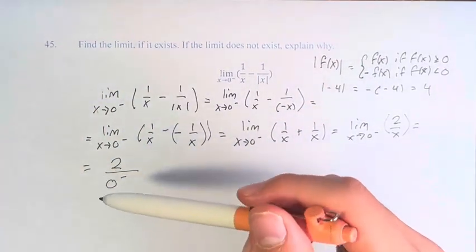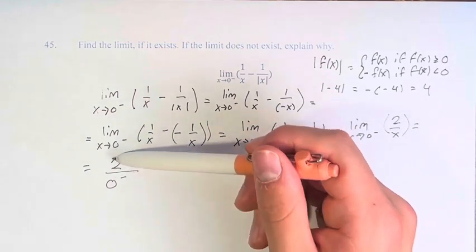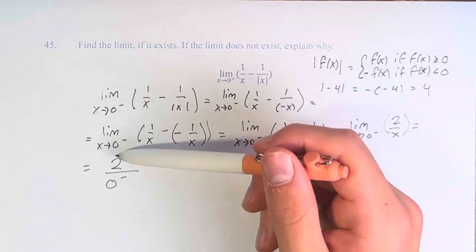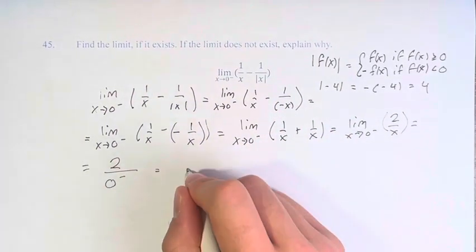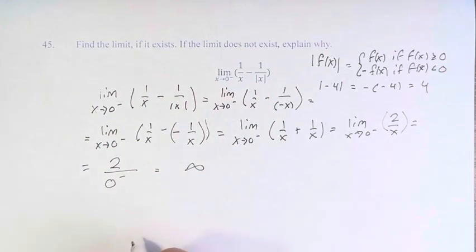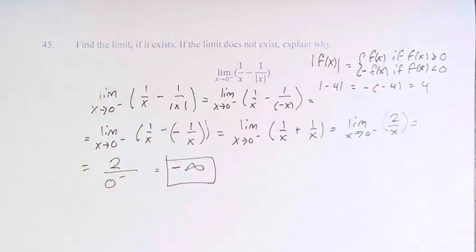So if we're approaching values of 0 from any side, and we're taking some number and we're dividing by those values, dividing by smaller and smaller values means this is going to go off to infinity or negative infinity. Since we're less than 0, these are negative numbers. So a positive number divided by a negative number means this is negative infinity. Therefore, the value of this limit is negative infinity.